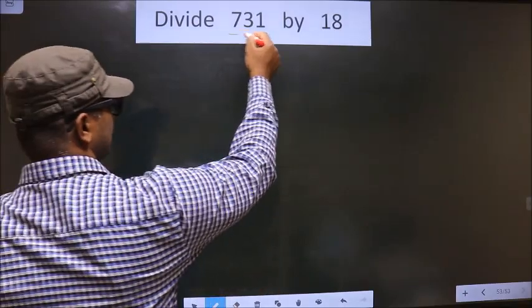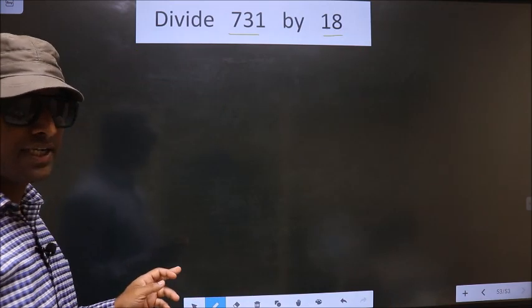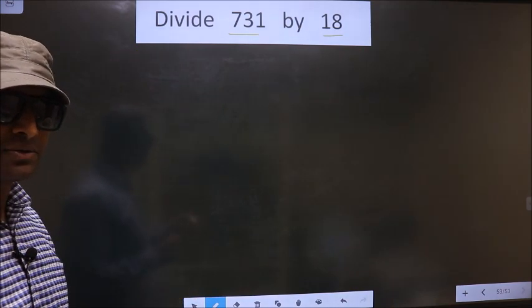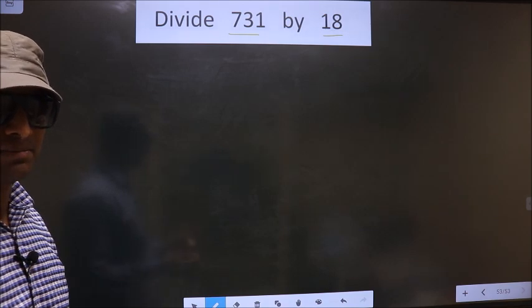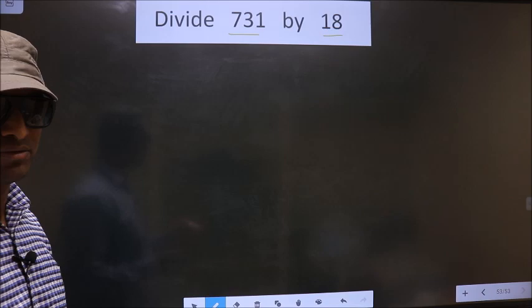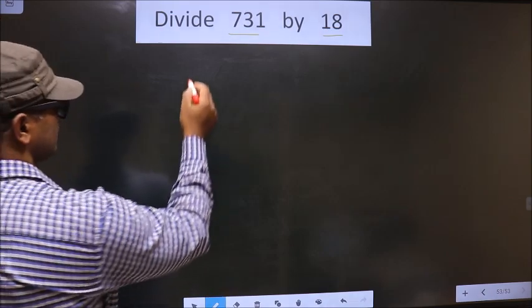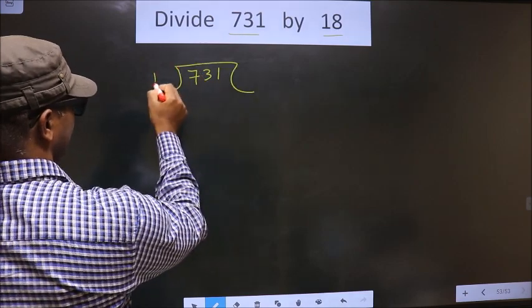Divide 731 by 18. While doing this, many do a mistake. What is the mistake that they do? I will tell, but before that we should frame it in this way: 731 divided by 18.